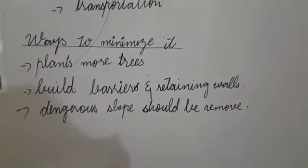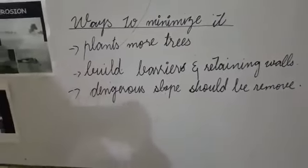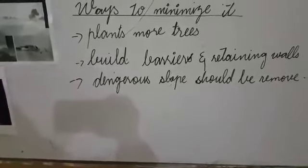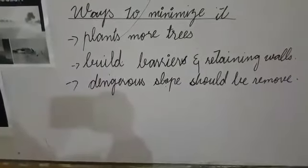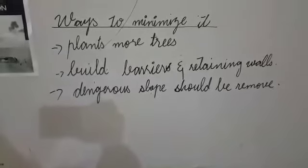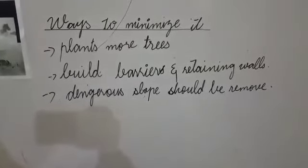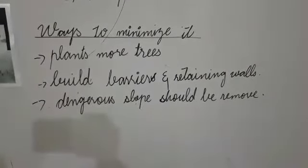Now, what are the ways of minimizing these impacts? We can minimize these by planting the more trees and plants which control the mass wasting and erosion. In hilly areas where slopes are steep, barriers and retaining walls should be built.